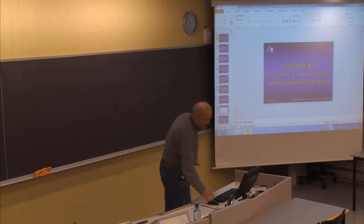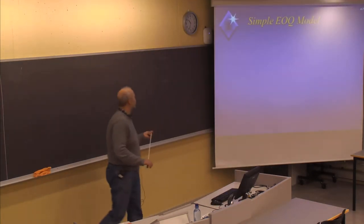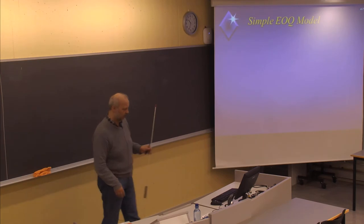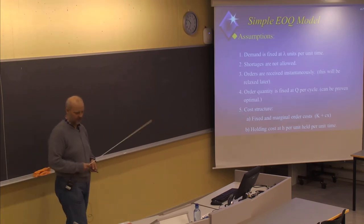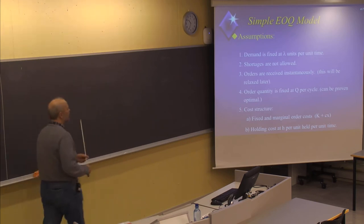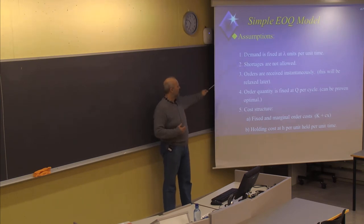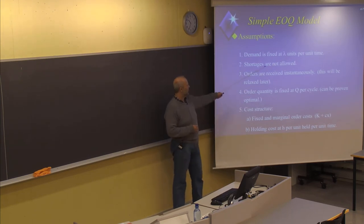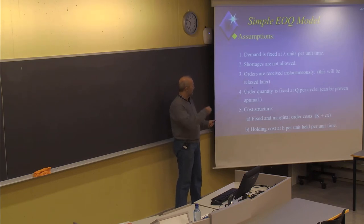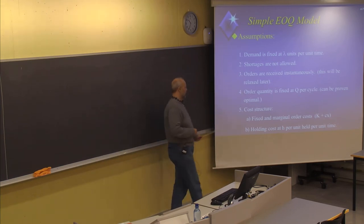As we started last week, this is the simple EOQ model to calculate the order size when you have a fixed demand rate. You know the demand rate and how much you will sell. There are some assumptions here, but all the assumptions will be relaxed later. The demand is fixed at lambda units per unit time, you are not allowed to have shortages or stockouts, and orders are received instantaneously.